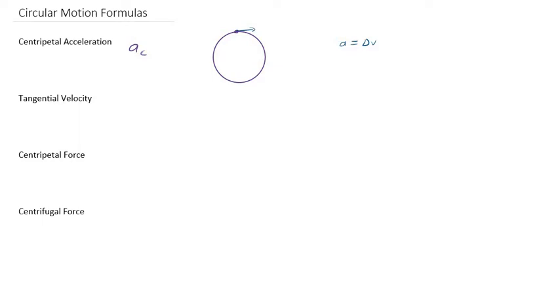So remember that centripetal acceleration is kind of a special kind of acceleration. It doesn't change the speed. It only changes the direction of velocity. And it's required for an object to be able to move in a circle.